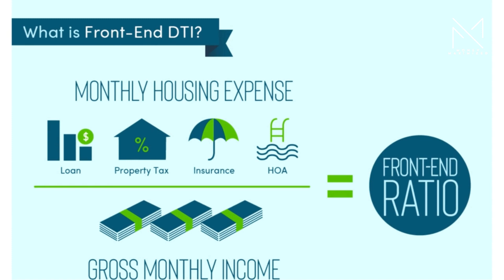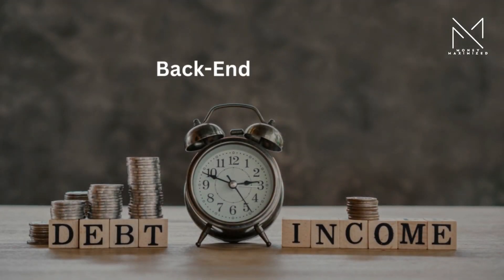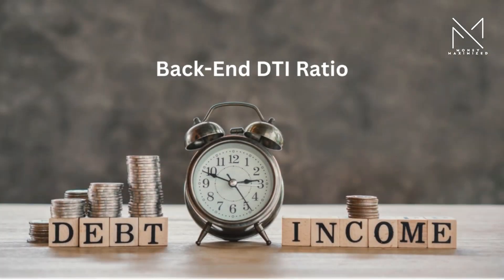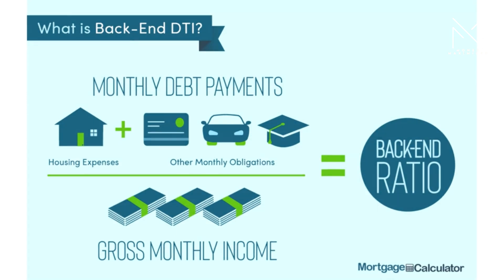Lenders often use the front-end ratio when evaluating mortgage applications. The back-end DTI ratio includes all debt payments, not just housing expenses, and is calculated by dividing total monthly debt payments by gross monthly income. Lenders generally use this ratio to assess overall debt management.